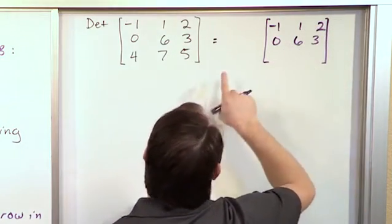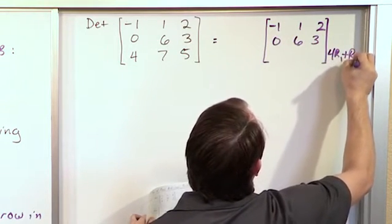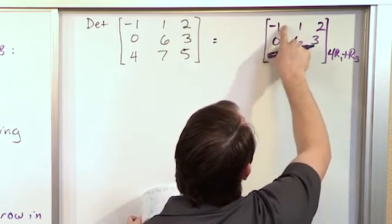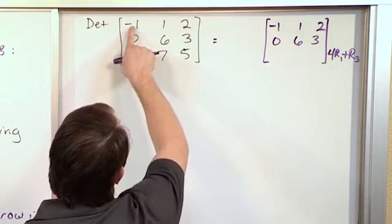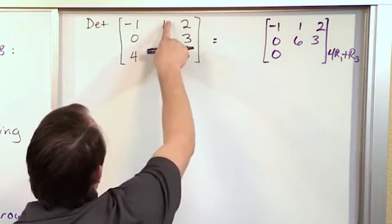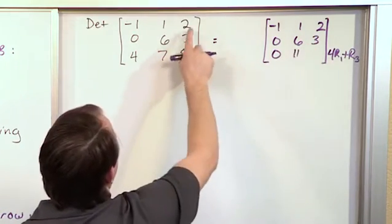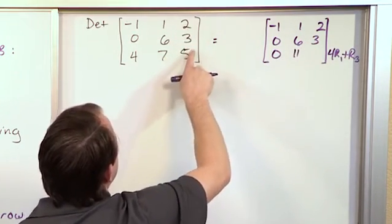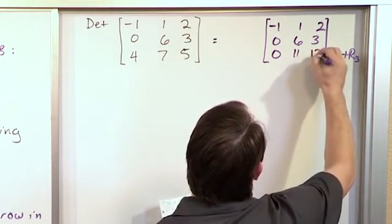What I'm doing is I'm saying four times row one plus row three. That's what this notation means. Four times row one plus row three. So when I take four times this, I get negative four. When I add it here, it gives me my zero. When I take four times this, that's four. Plus seven, that's 11. And when I take four times this, four times two is eight. Plus this guy should give me 13. And that's what I end up getting, 13.